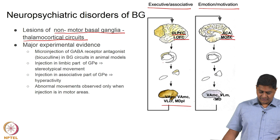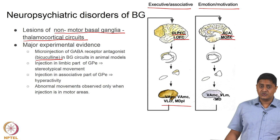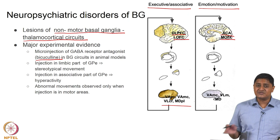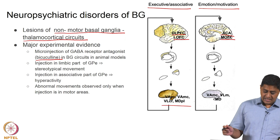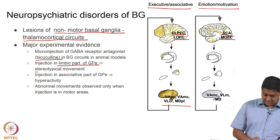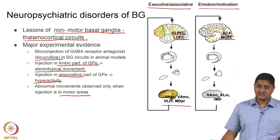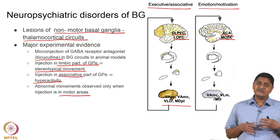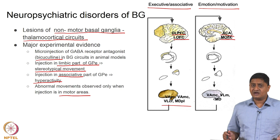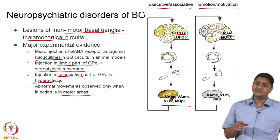A lot of experimental evidence comes from the usage of the GABA receptor antagonist Bicuculline in Basal Ganglia circuits. In animal models, injection of Bicuculline in specific areas causes specific dysfunctions. If the injection is to the limbic part of the GPe, there are stereotypical movements, whereas if it is to the associative part there is hyperactivity. Abnormal movements are observed only when the injection is in motor areas. Depending on which part is affected, the response varies accordingly.